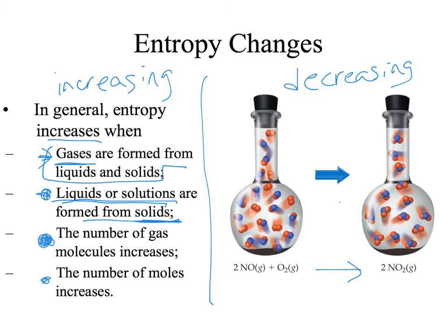Over here this picture is an example of entropy decreasing. We start out with three moles of gas — two moles of nitrogen monoxide and one mole of oxygen — and they react to form two moles of nitrogen dioxide. So you are decreasing the number of moles of gas. You started with three moles and ended with two, so your entropy has gone down. We're going to learn that a spontaneous process will result in an increase in the entropy of the universe, and we're going to compare the changes in the system to the change in the universe to decide if it's spontaneous.